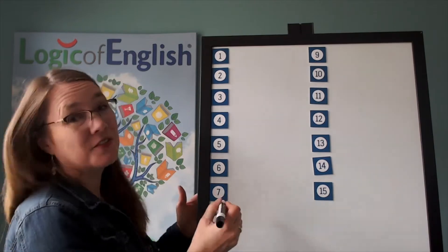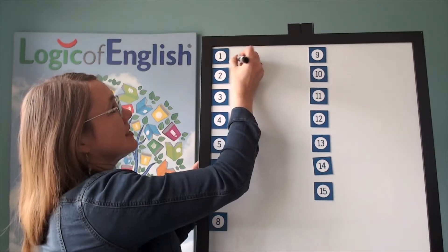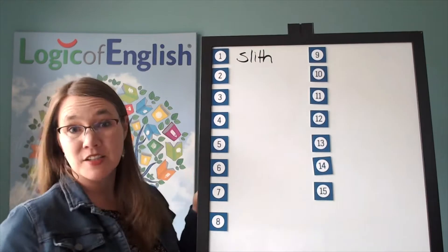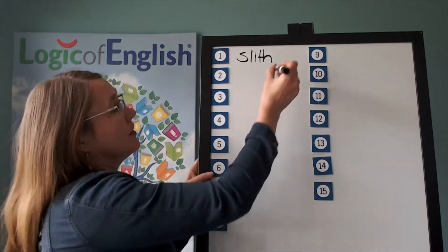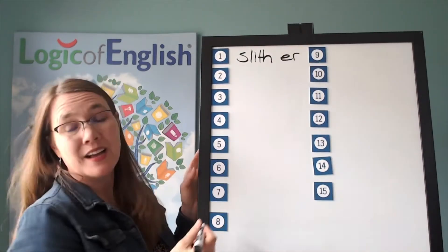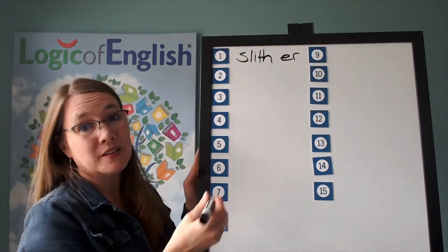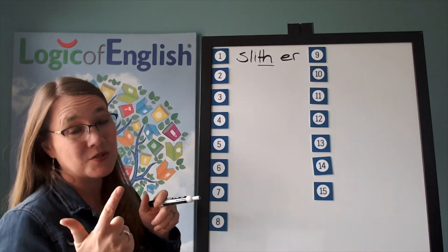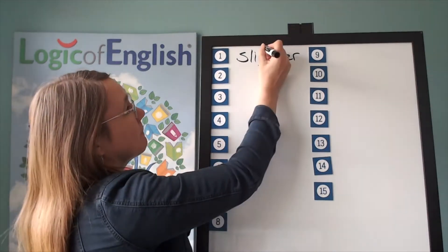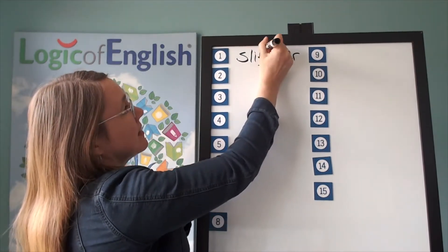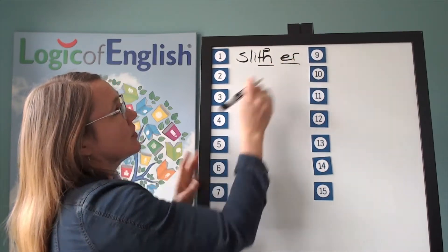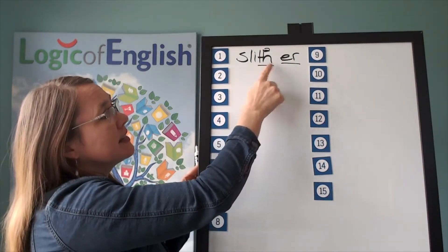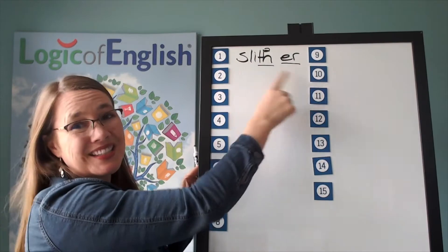Now help me to write it. The first syllable is slith, the second syllable is er. Let's write and mark it. We'll underline the v. What sound does th make here? That's right — it's the second sound. And we'll underline the er. Let's read it: slither.